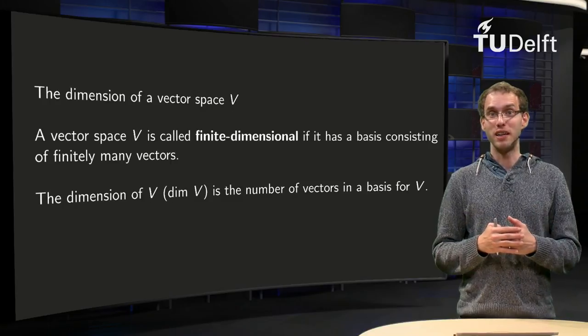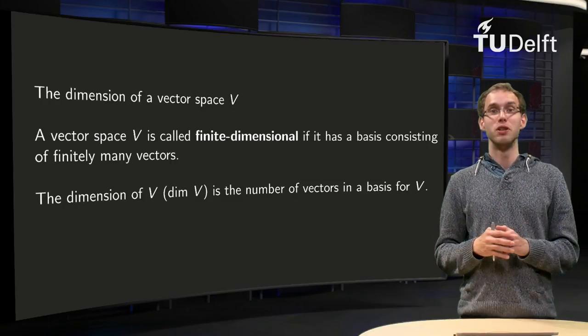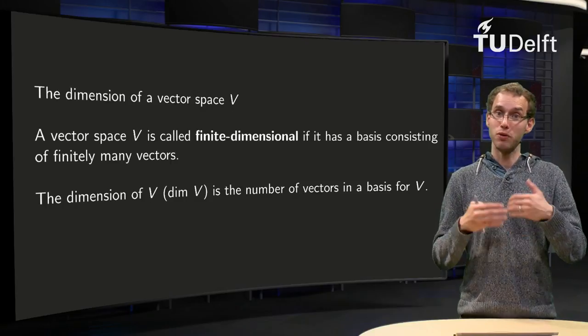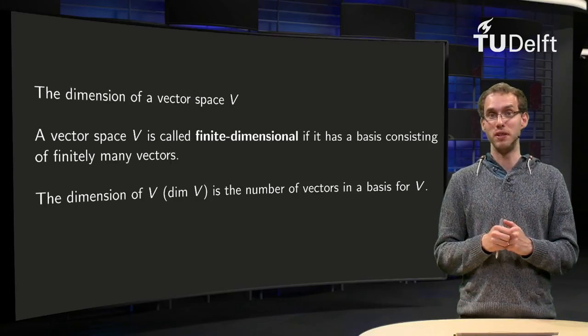So if such a vector space is finite dimensional, you can count the number of vectors in the basis for V, and that number which you get is what we call the dimension of the vector space V.